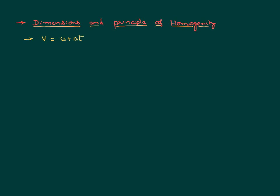If you check the dimensions of the LHS of the equation v = u + at, the LHS is velocity. Velocity is the rate of change of displacement — length by time — so its dimension is LT⁻¹. Now let us look at the dimensions of the RHS, which is a combination of two terms. U is again a velocity, so its dimension is LT⁻¹.